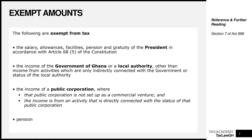The next amount exempt from income tax is the income of the Government of Ghana itself or a local authority, other than income from activities which are only indirectly connected with the government or status of a local authority. Any income that the Government of Ghana or a local authority makes is exempt from income tax, unless that income is indirectly connected with the status of the government or the local authority. We don't expect the government to be in a commercial venture for its own benefit.